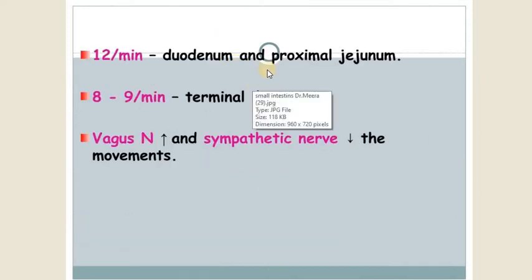In duodenum and proximal jejunum, it occurs at the speed of 12 per minute, and in terminal ileum, it occurs at the speed of 8 to 9 per minute. Vagus nerve increases and the sympathetic nerve reduces these movements.